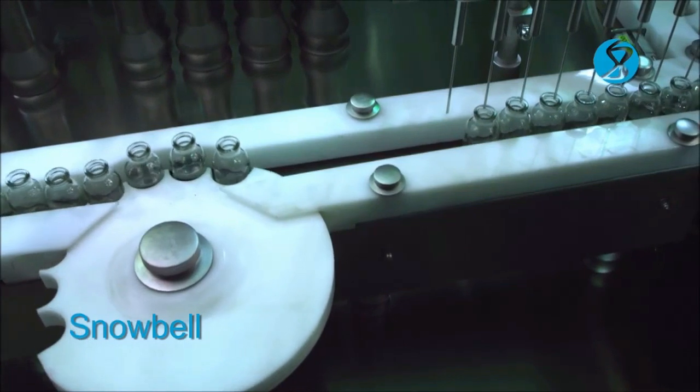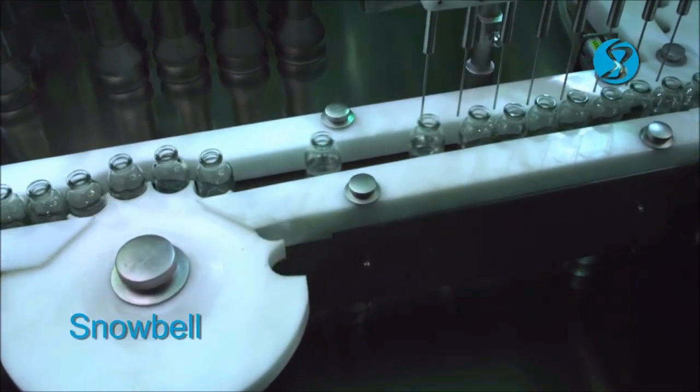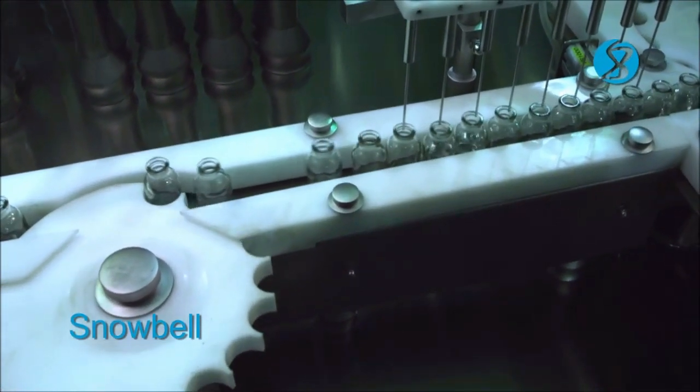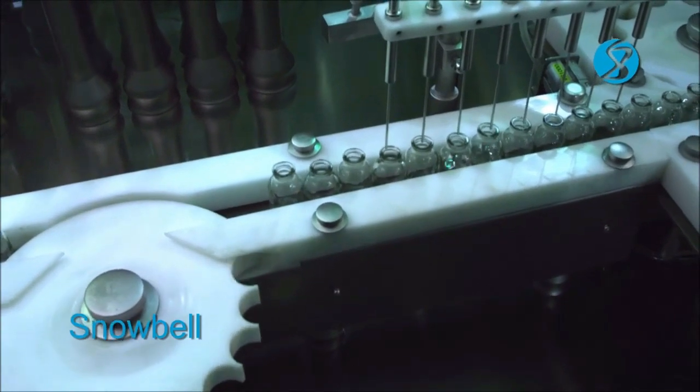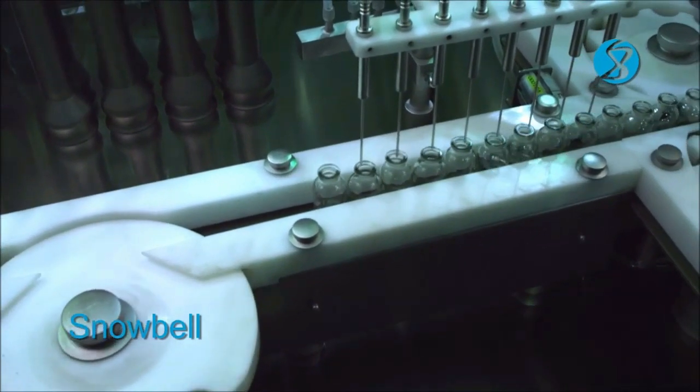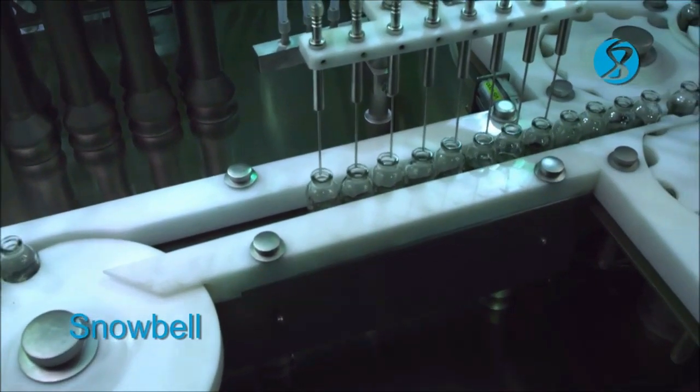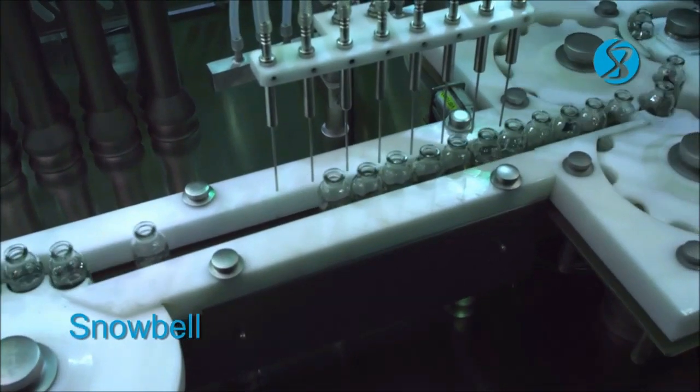At a given time, eight filled vials are released by the star wheel and are carried towards the stoppering station. Filtered compressed nitrogen is used for pre- and post-gassing of vials.